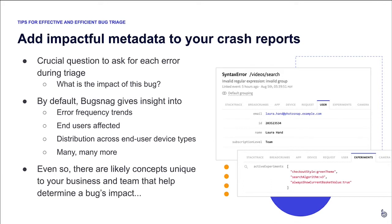Some of you will be familiar with the concept of adding custom metadata to your crash reports in BugSnag. For those of you who aren't, this is definitely something you're going to want to look into. Regardless of what kind of code base you're monitoring with BugSnag — whether it's a mobile app, something server-side, or anything in between — for each crash, you can add custom metadata to each crash report that contains useful information.